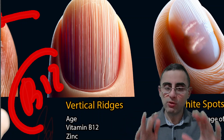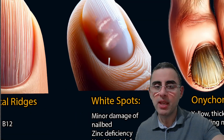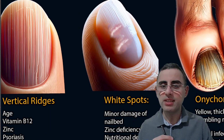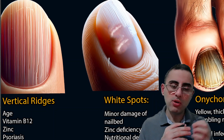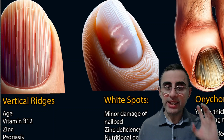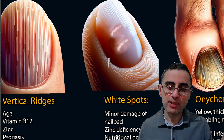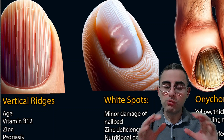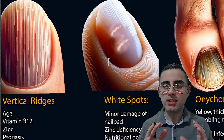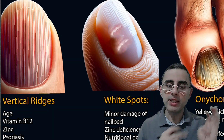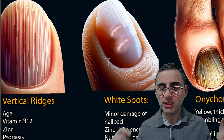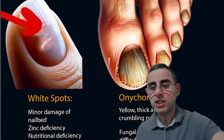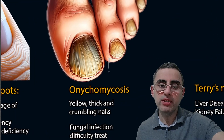White spots are very common and widespread. Usually they are harmless and caused by minor damage to the nail bed. However, they can be caused by zinc deficiency or nutritional deficiency — this is especially important among children who have active growth phases, as white spots can indicate nutritional deficiency and cause growth problems. That's why we should pay attention to white spots among children.